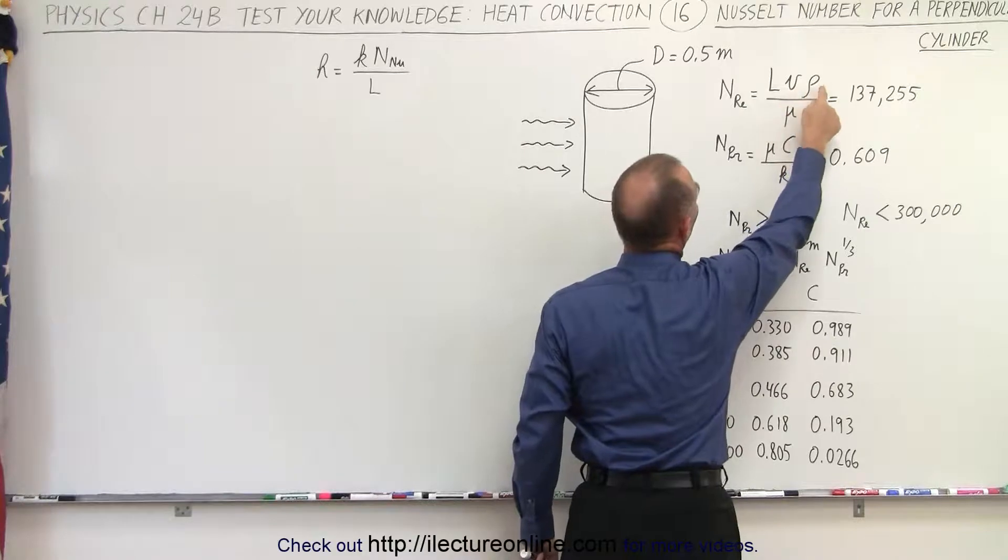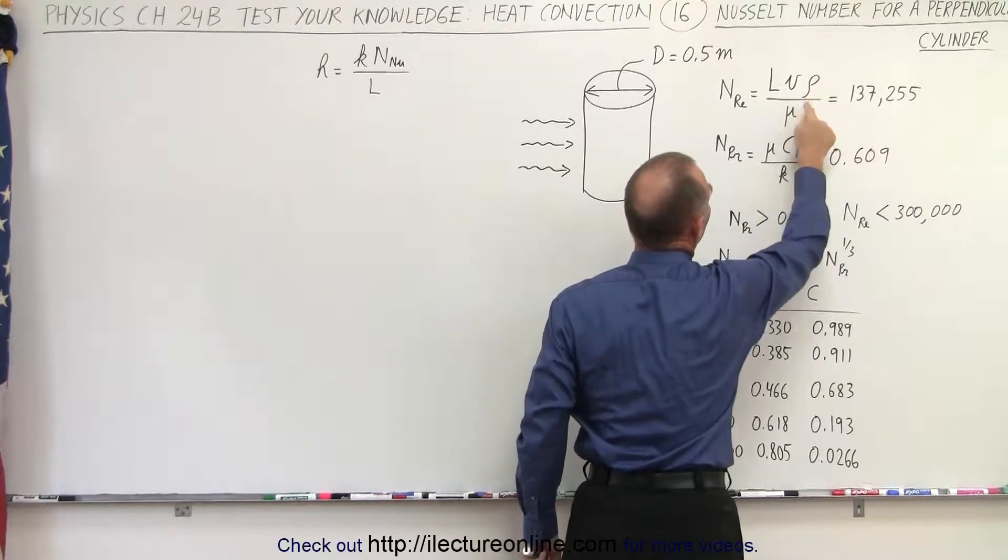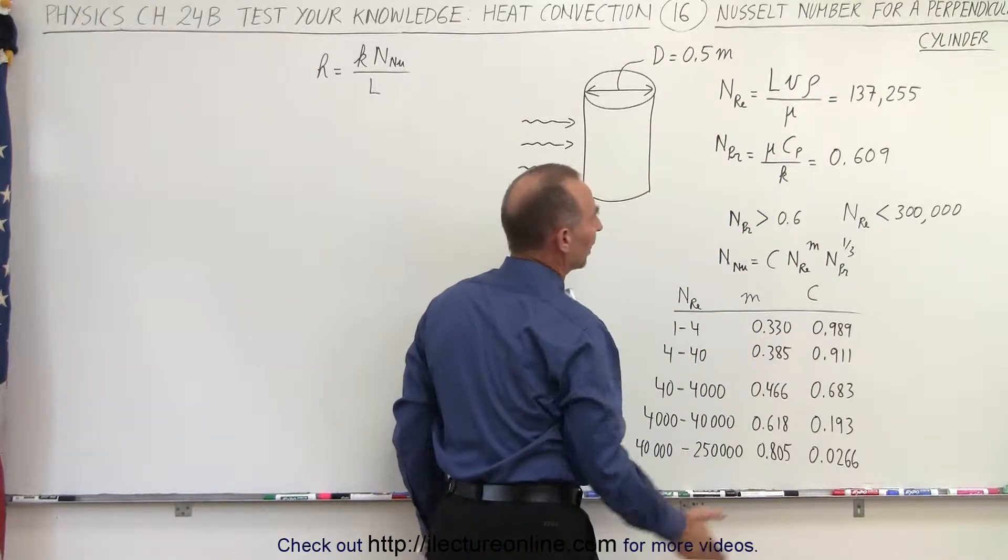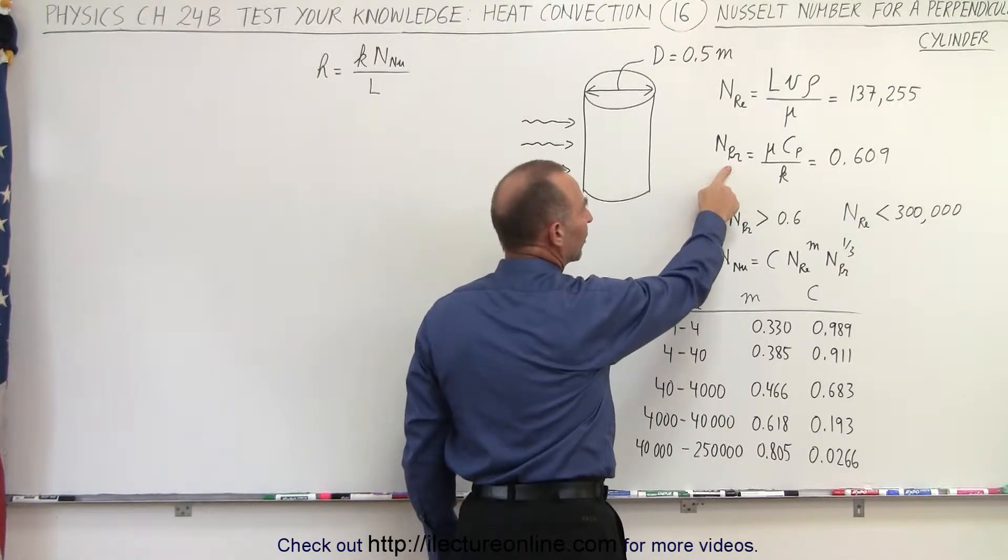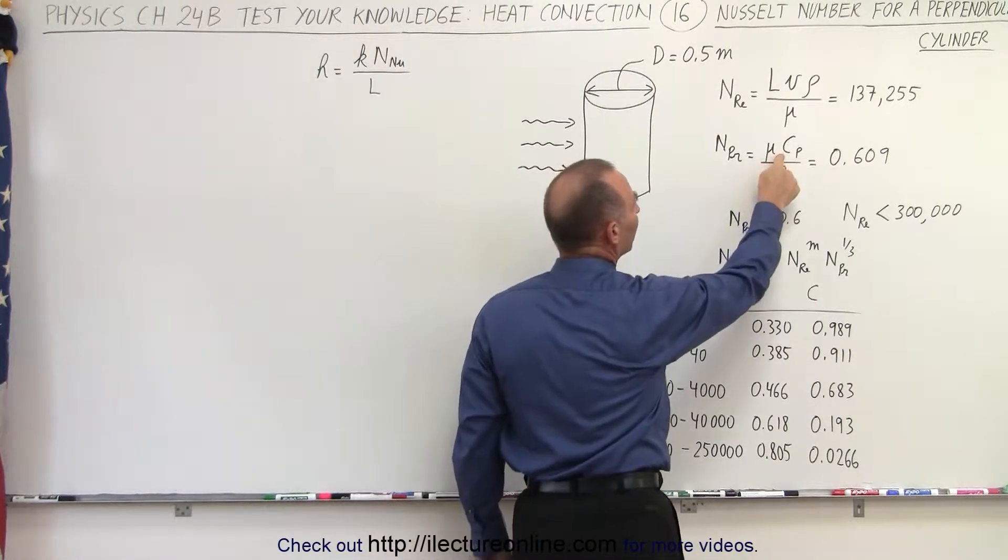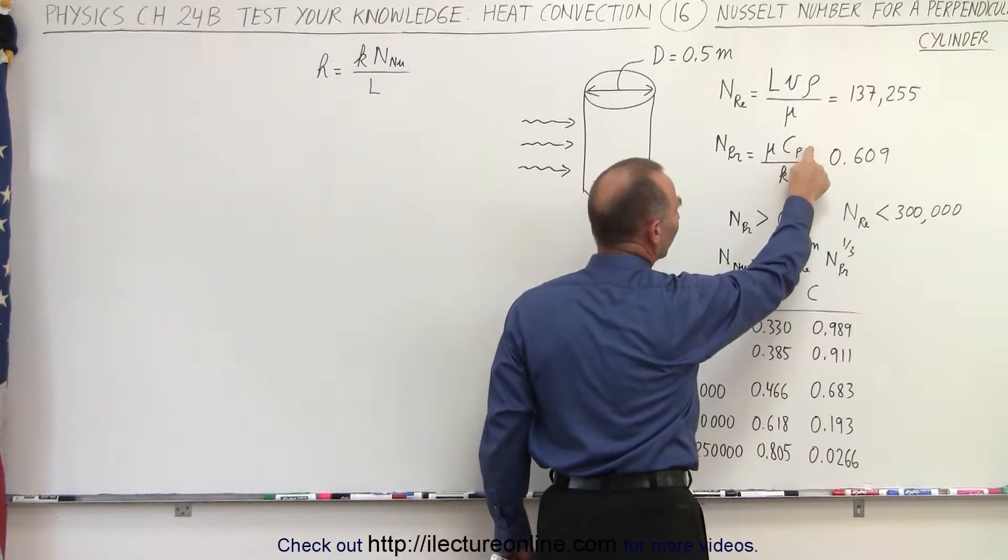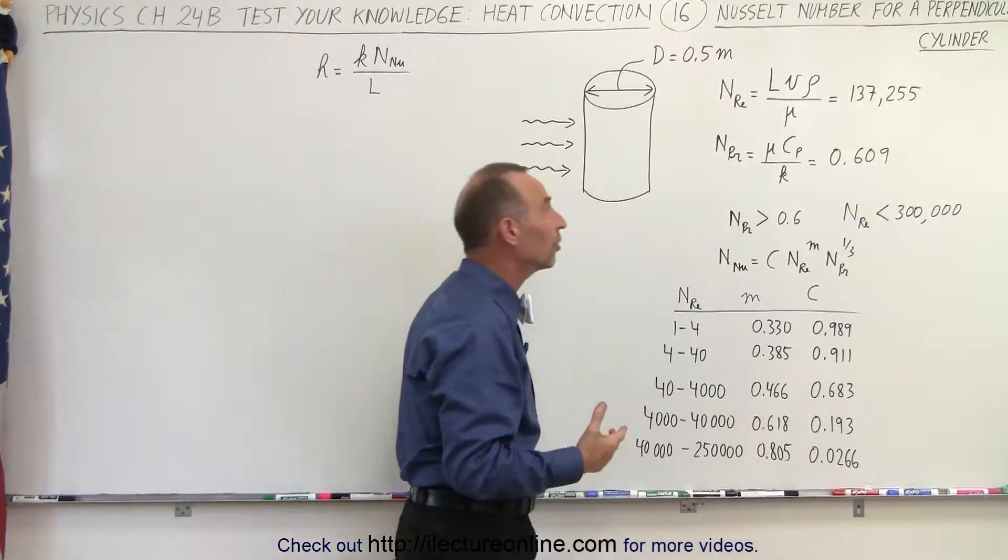The velocity of the wind, or the air I should say, the density of the air, and the viscosity of the air. To calculate the Prandtl number, we need to know the viscosity, we need to know the specific heat, and we need to know the conductivity constant.